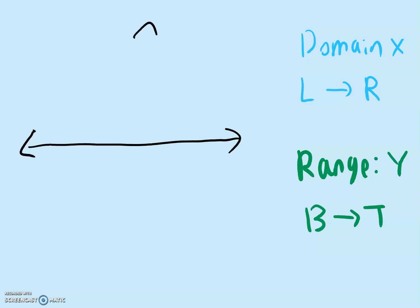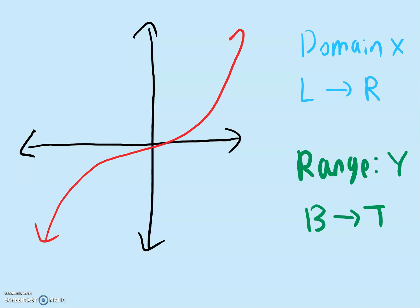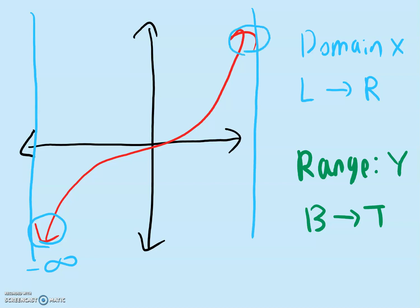Let's look at an example of a cubic function. To find the domain, we start from the left side. I draw a line, and as you see this line touches this arrow. This arrow over here goes forever to the left, so that means it will keep on going forever — we call that negative infinity. On the right side we have another arrow that goes forever to the right, so that is positive infinity. So the domain is going to be negative infinity to positive infinity.